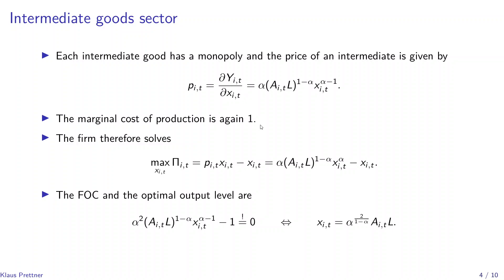The marginal cost of production is again 1, since the input in production is the final good and we assume a one-to-one production function. The firm solves for profits equal to the price — plugged in from the inverse demand — times output, minus the cost of production which is 1 times output. Multiplying X_it by the price causes the minus 1 in the exponent to vanish, leaving minus X_it. Taking the derivative with respect to X_it gives the first-order condition: alpha squared times A_it L to the exponent alpha minus 1, minus 1, equals 0 for a profit maximum, which we solve for the optimal output level — the same expression as in the one-sector model.